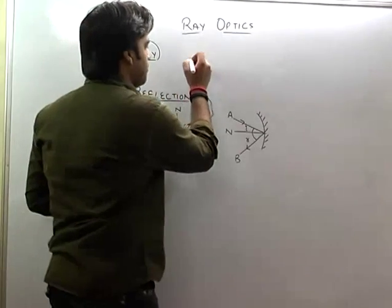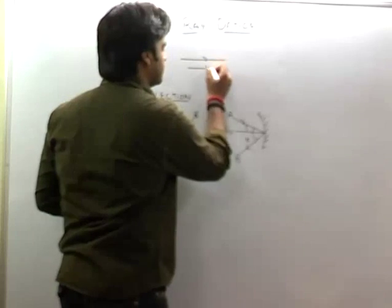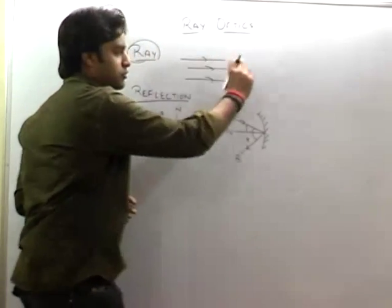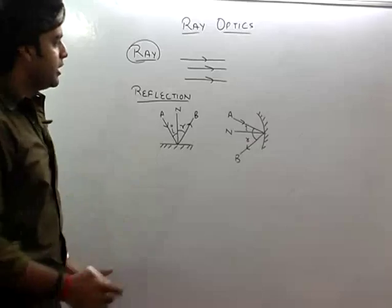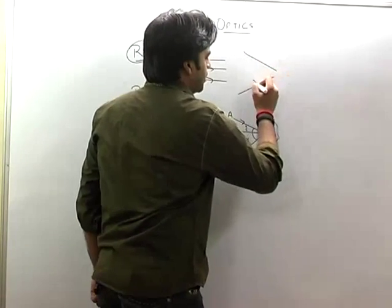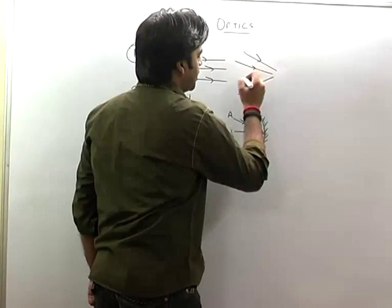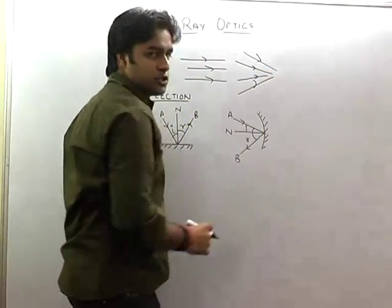Beam of light can be parallel. If rays go like this, they are called parallel beam of light. One type is convergent, meaning rays converge at one point. This is called convergent beam of light.